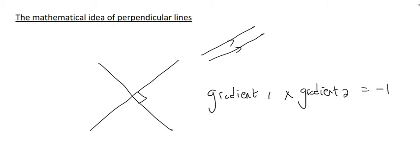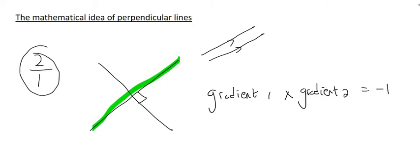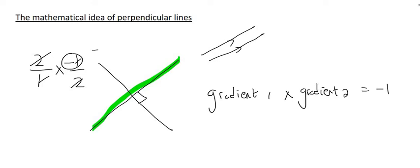Let's quickly see how this would work. If the gradient of a line is 2, well, 2 is the same as 2 over 1. So what is the complete opposite of that? You have to switch the number over, so it will be 1 over 2, and then change the sign — if it's positive, change it to negative. If we now multiply the two gradients together, the 2s would cancel, the 1s would cancel, and you would just be left with minus 1.